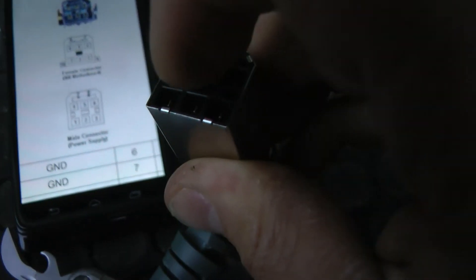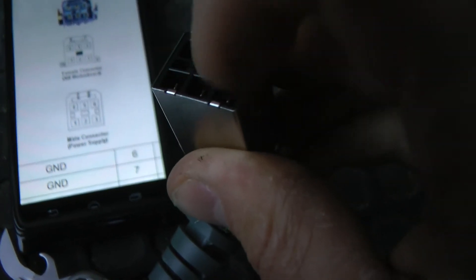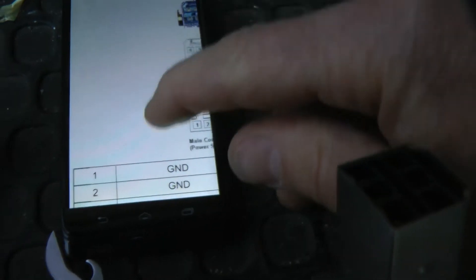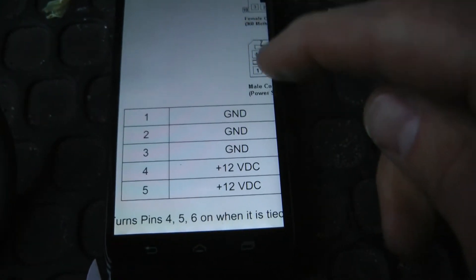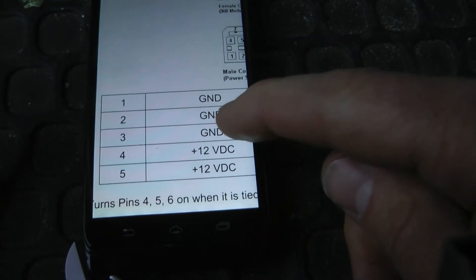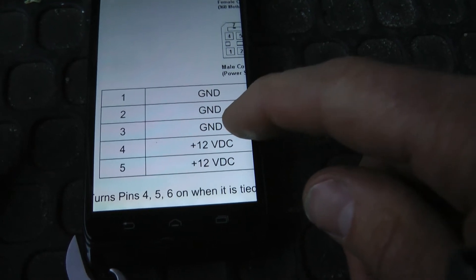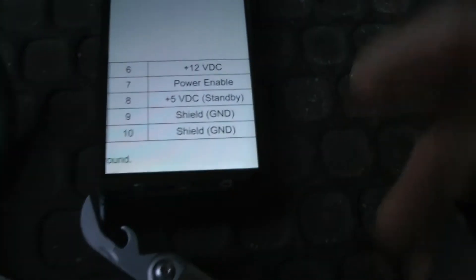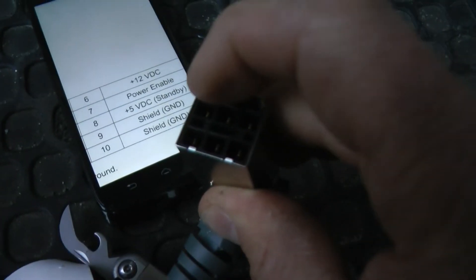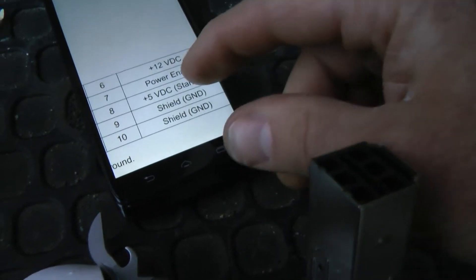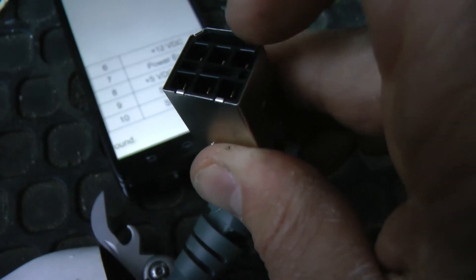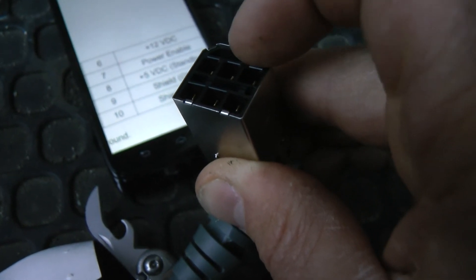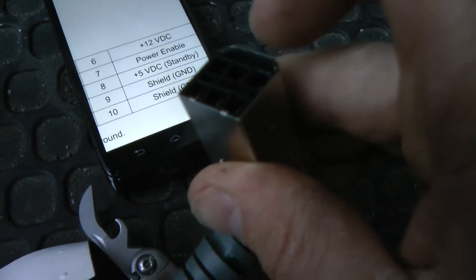It goes one, two, three, four, five, six, seven, eight. You can see one, two, three are ground. Four and five are 12 volts, six is 12 volts, seven, which is right up in here, is the power enable. Eight is five volts standby. Those are the two you have to short between seven and eight.